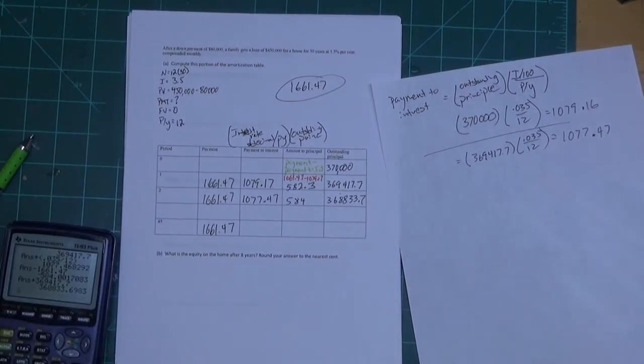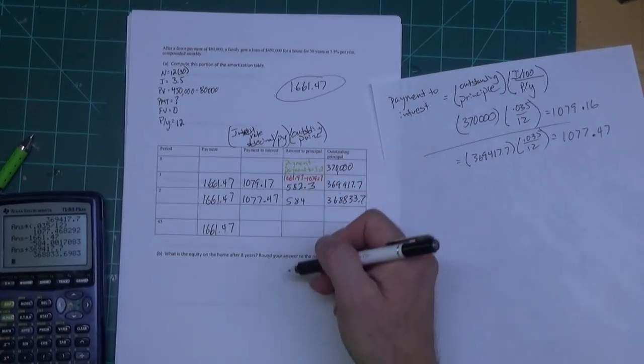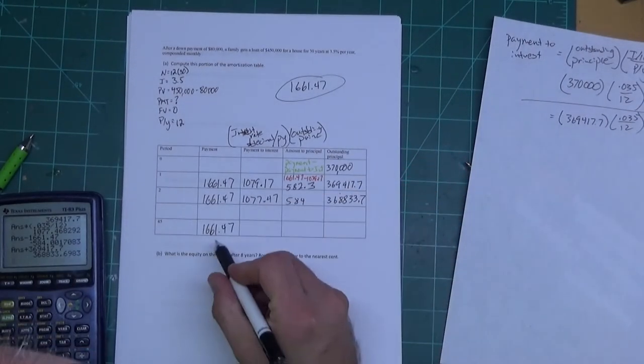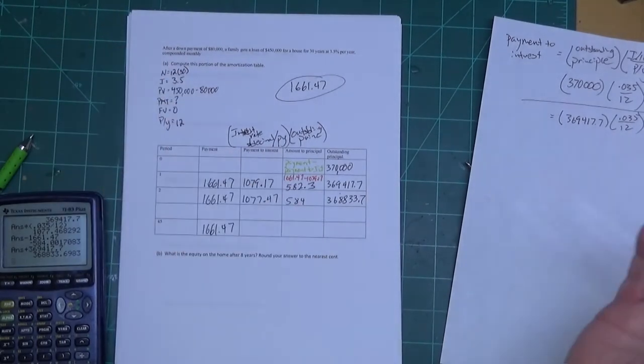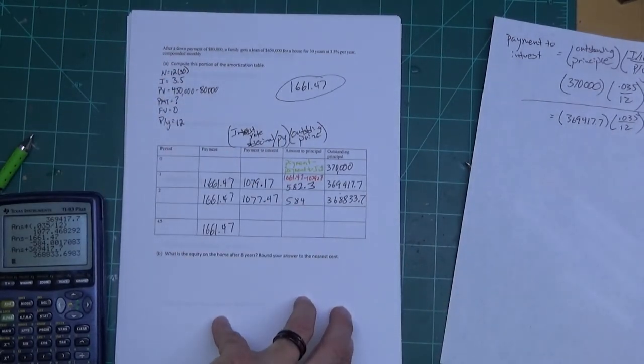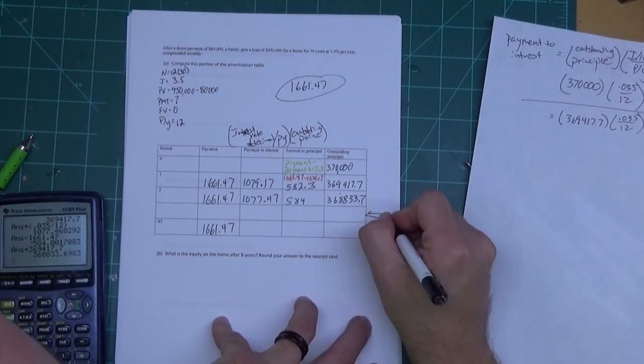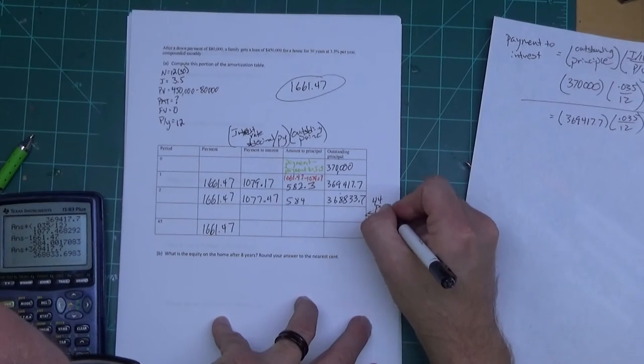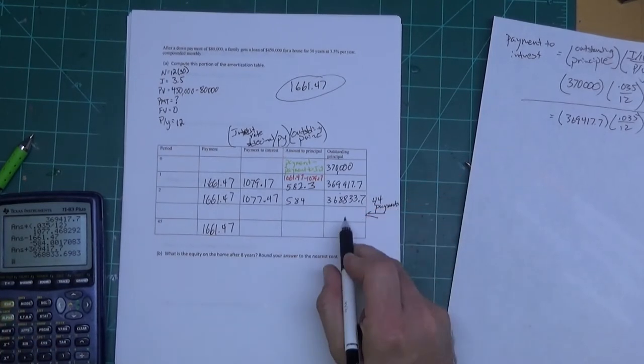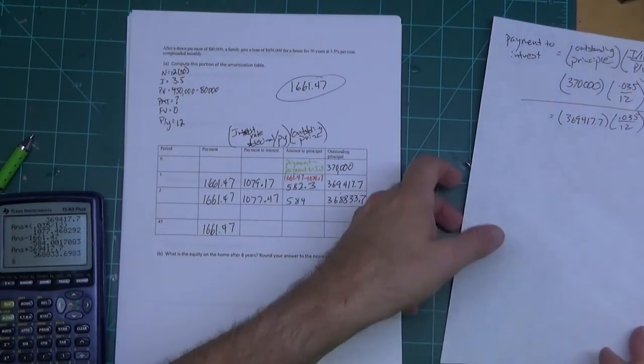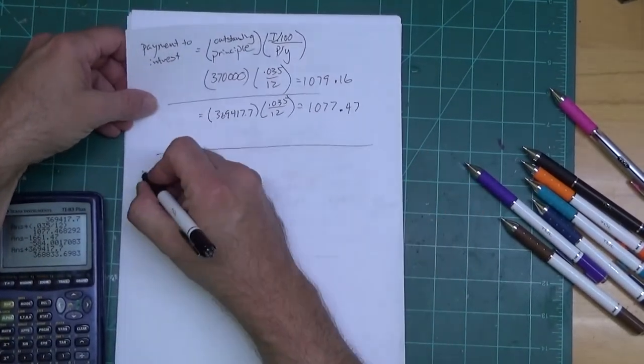If you were to fill out the entire amortization table it would be deadly - mind-numbing boredom to fill out 360 rows of this table. So what teachers like to do is say, okay, well let's find it for the 45th payment. In order to find the 45th payment I have to find the balance after 44 payments are made. So I have to find the balance here for 44 payments.